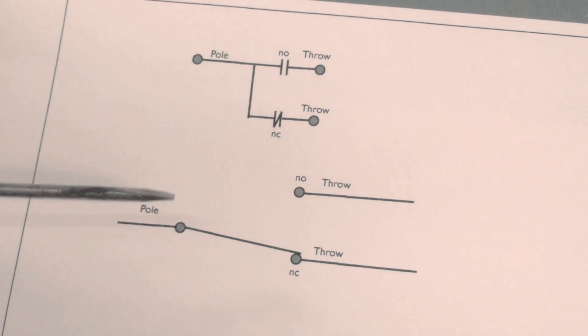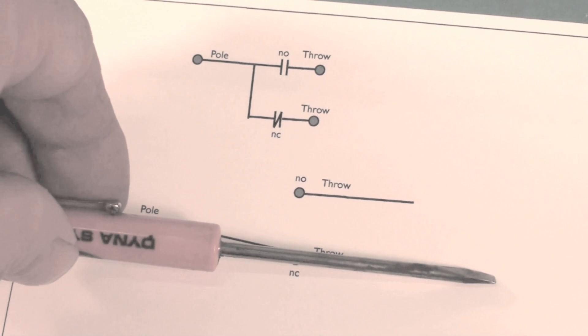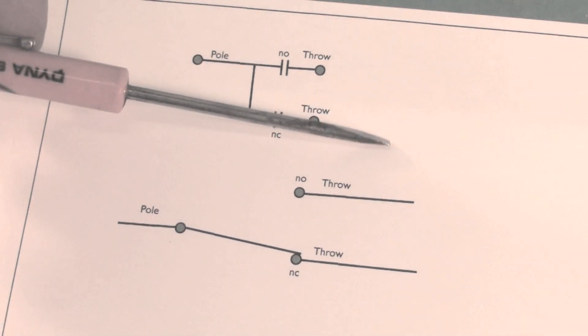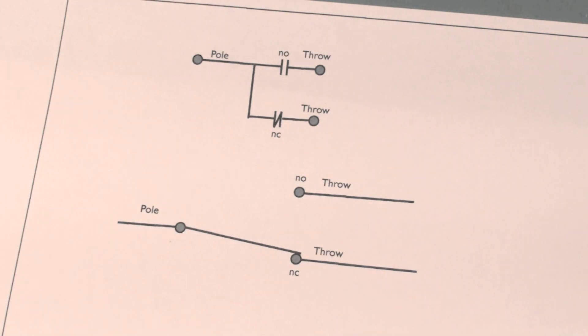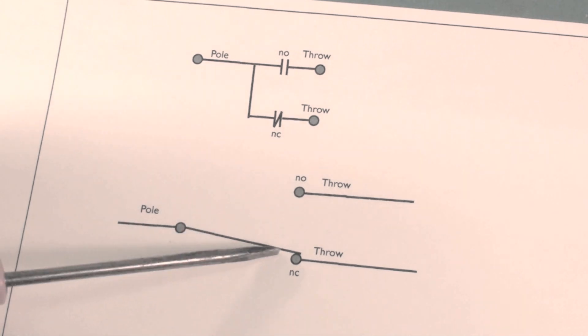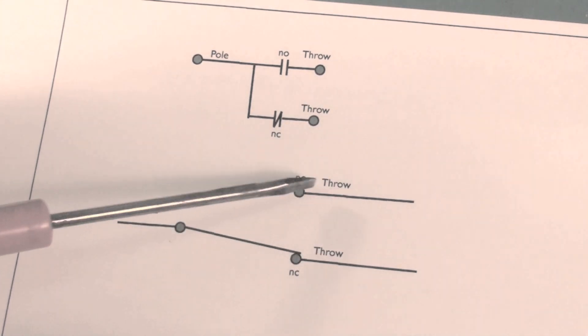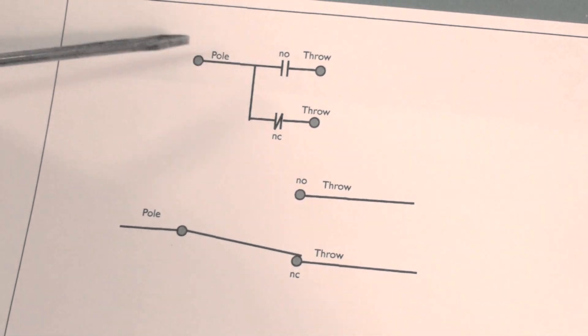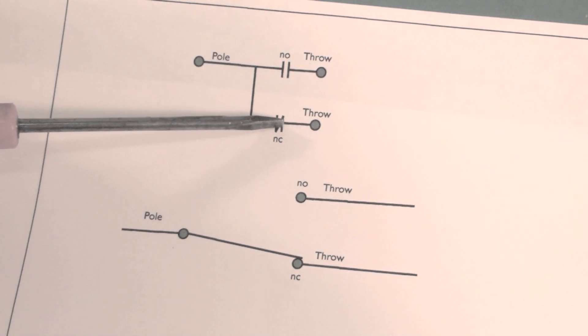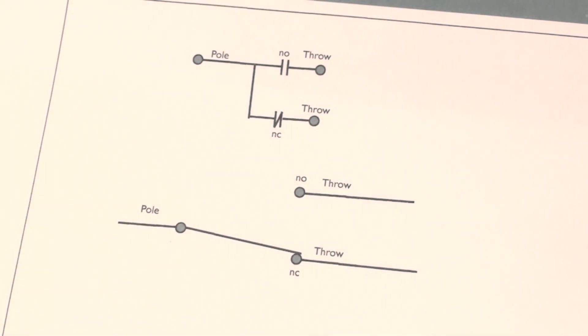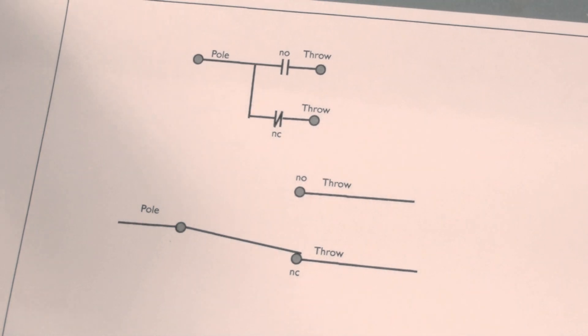Power in this case, in this bottom one, is going down this way. This one up here is going up here, down here, and over that way. When I energize the relay, this throw is going to go up here, shut this off, and turn this on. Or in this case it's going to open this and close this.